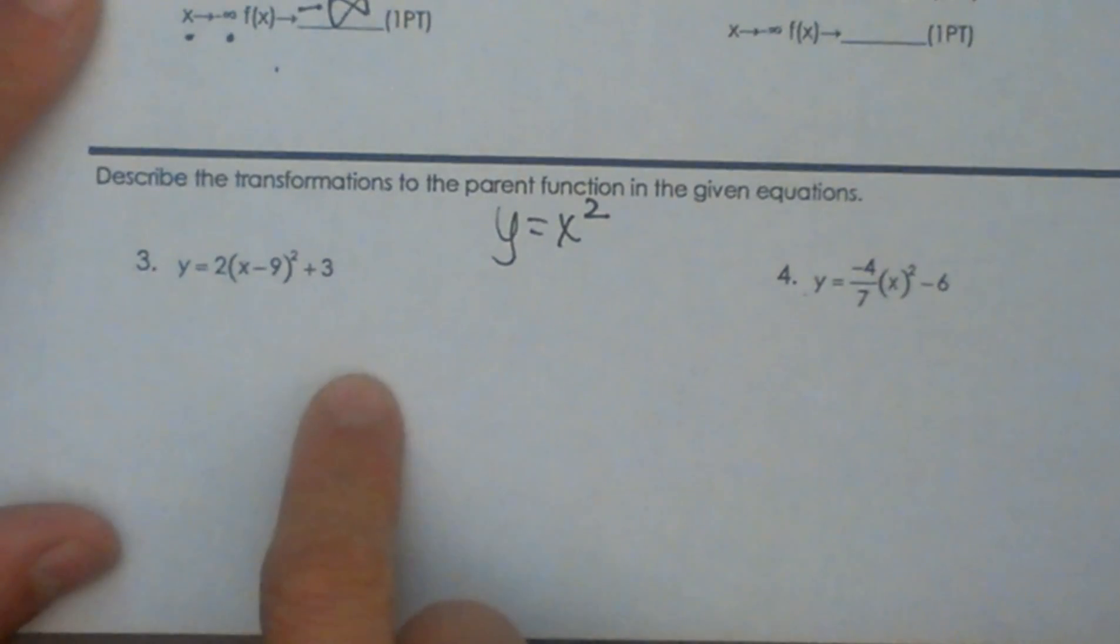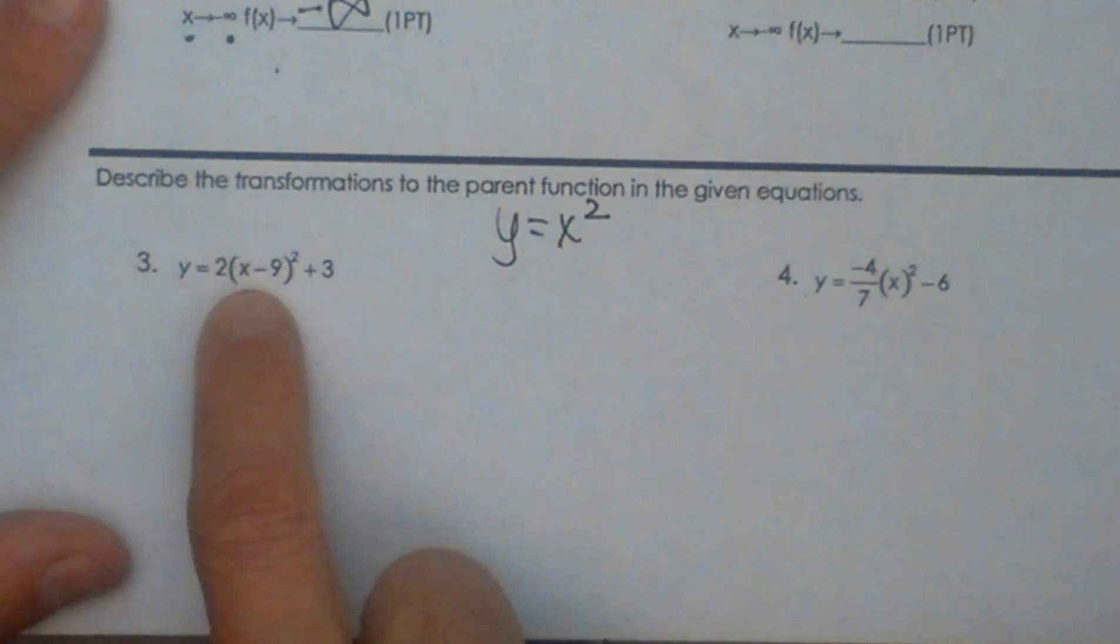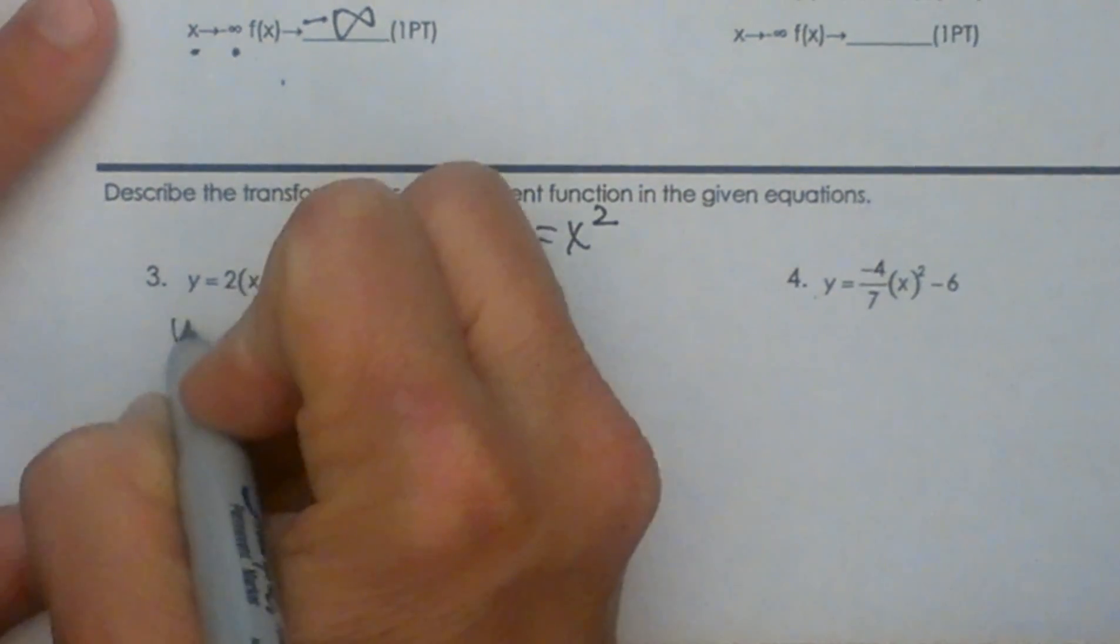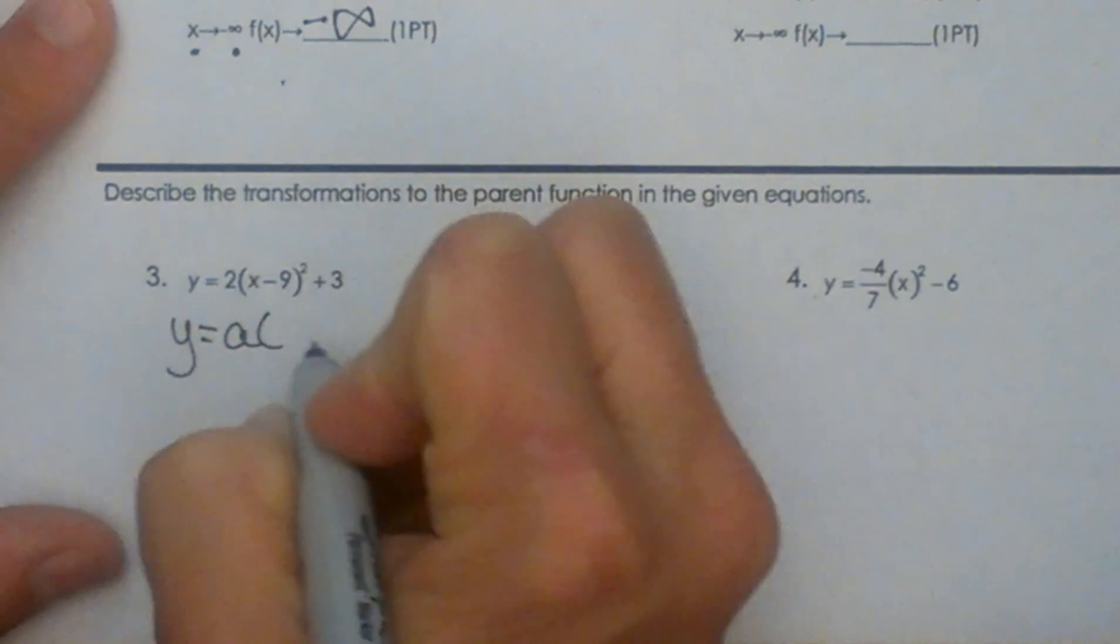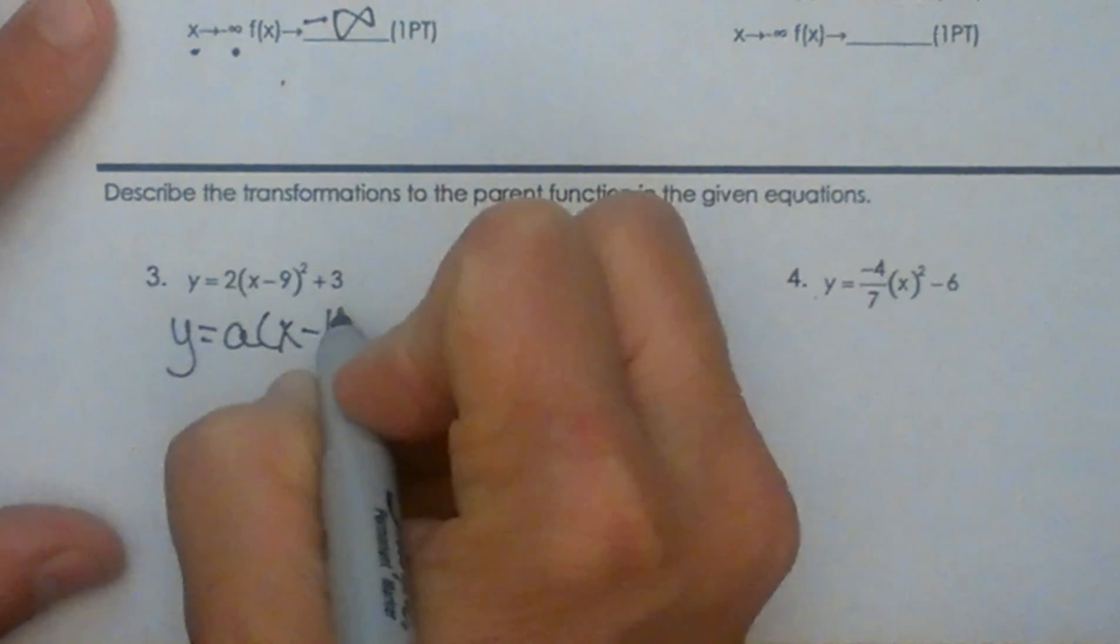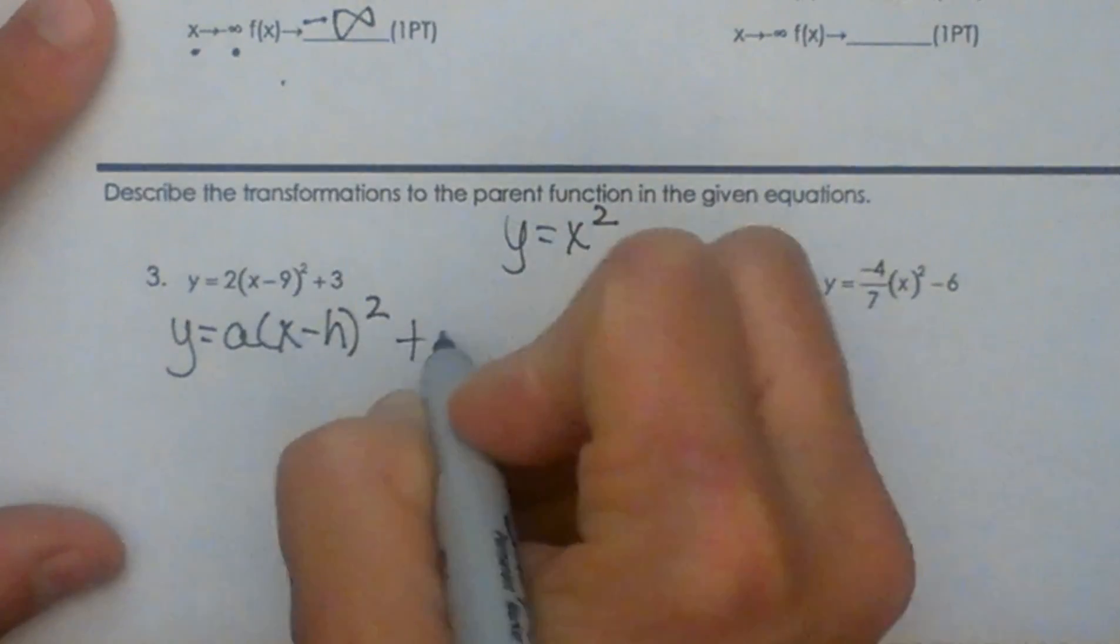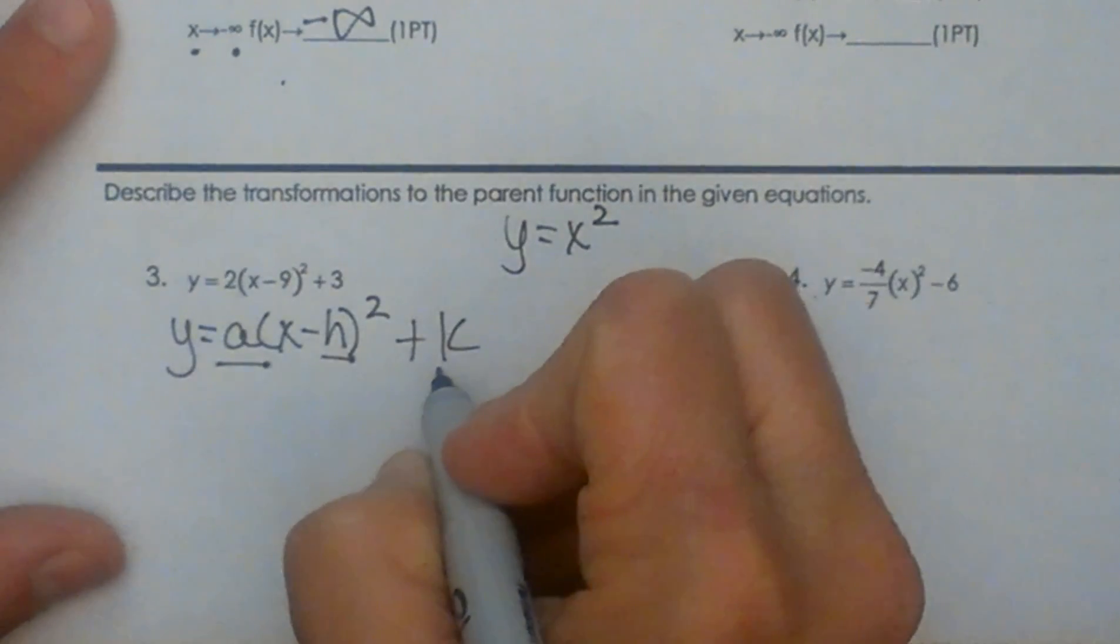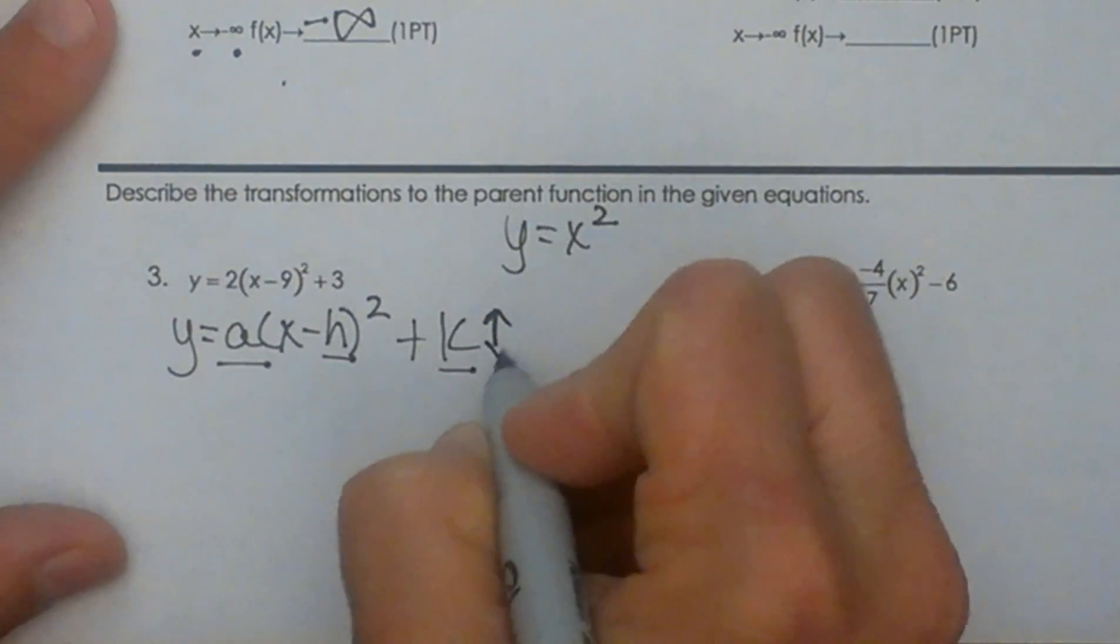So here is our first one. We have y equals 2 times x minus 9 squared plus 3. As we have learned, our skeleton equation is a times x minus h squared plus k, where a is a stretch or shrink, h is a horizontal shift, and k is a vertical shift.